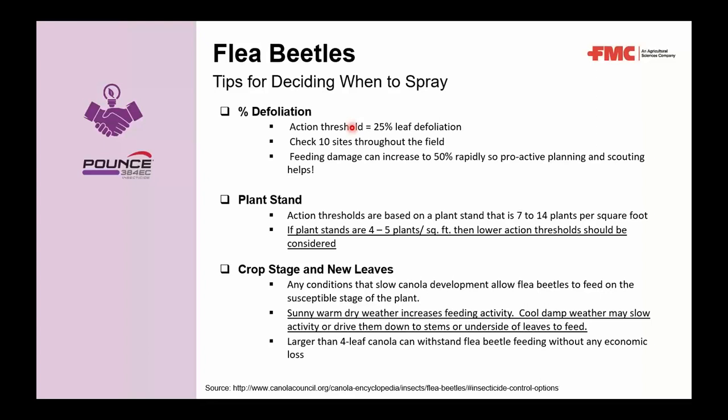Action thresholds are based on a plant stand of 7 to 14 plants per square foot. If plant stands are only 4 to 5 plants per square foot, lower action thresholds should be considered, as the crop has less ability to compensate for feeding damage.